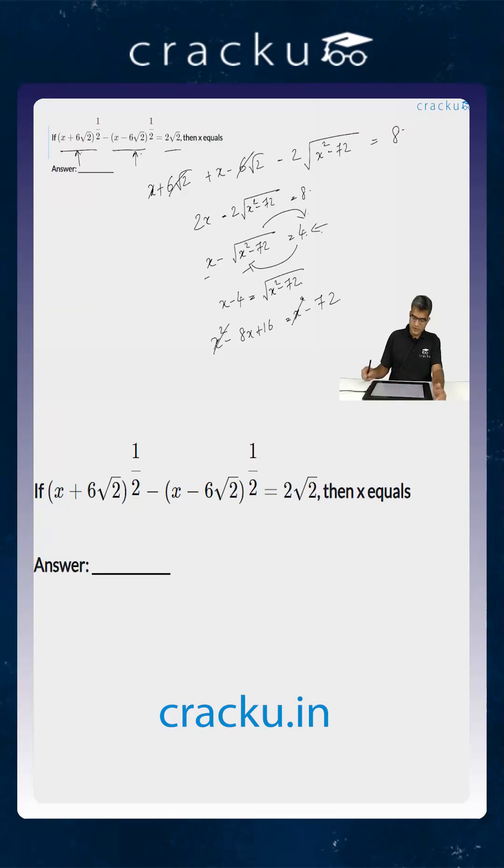We can cancel this too and we are going to get 8x is equal to 16 plus 72 which is equal to 88. So the value of x is equal to 11.